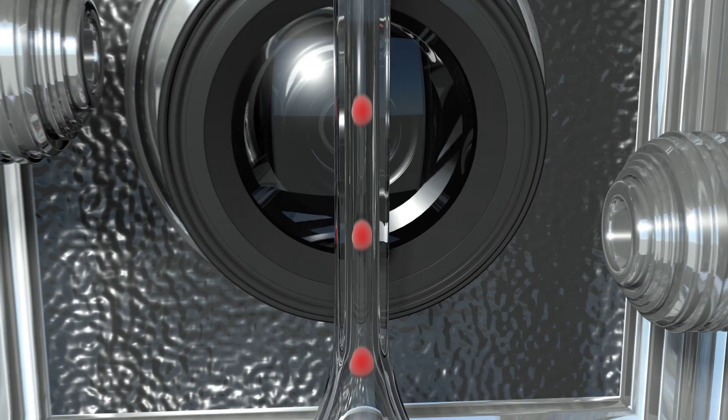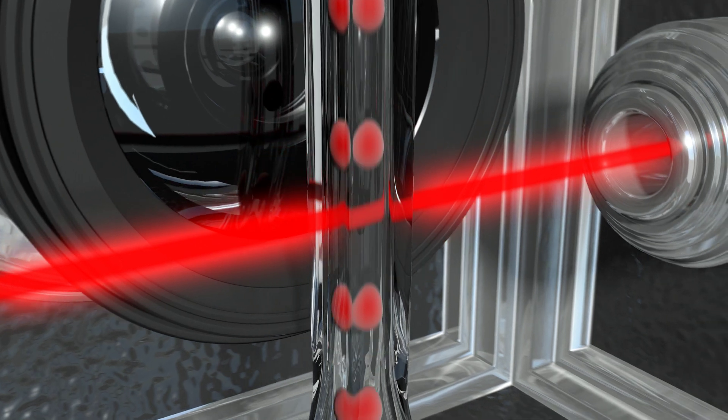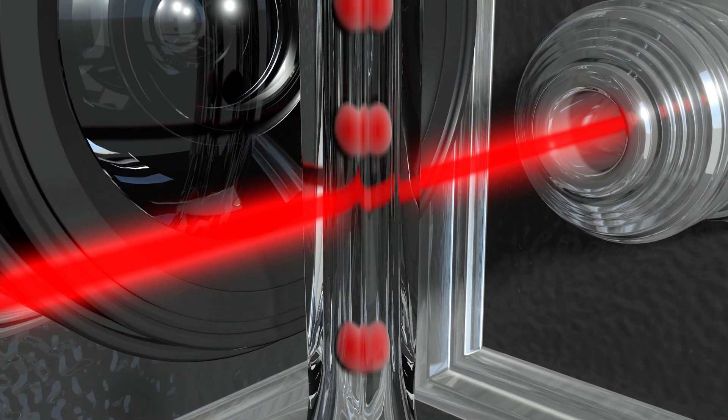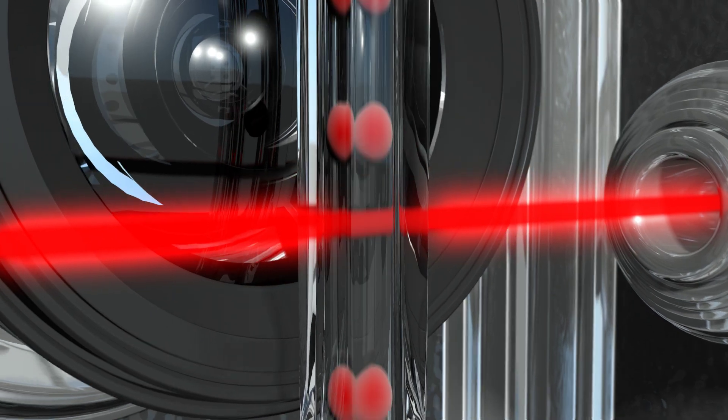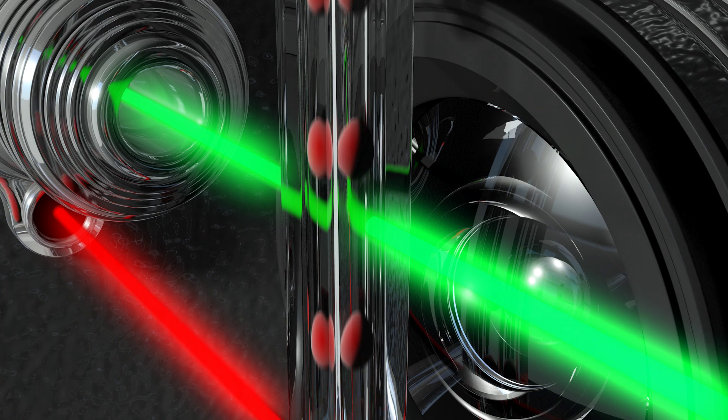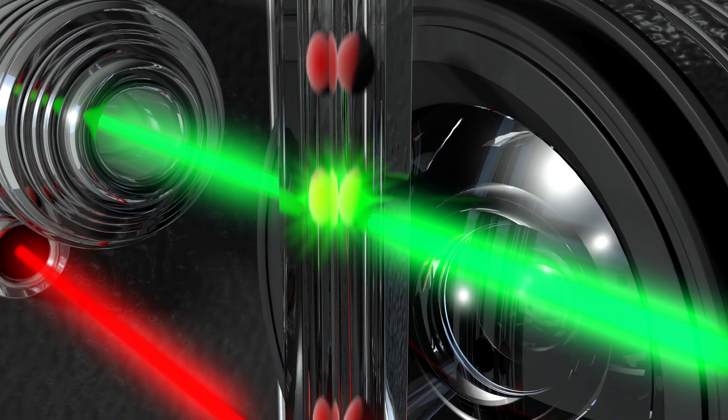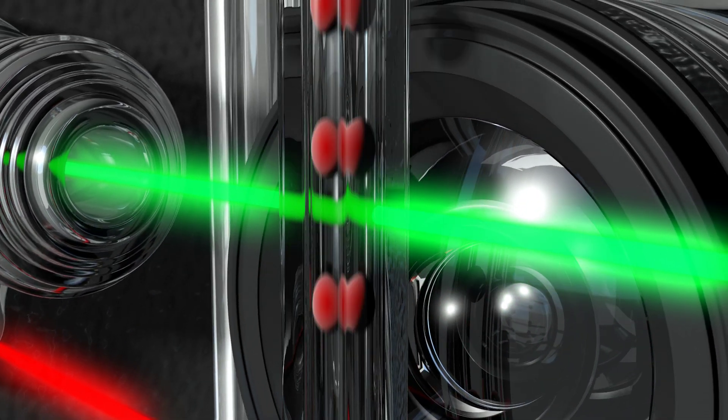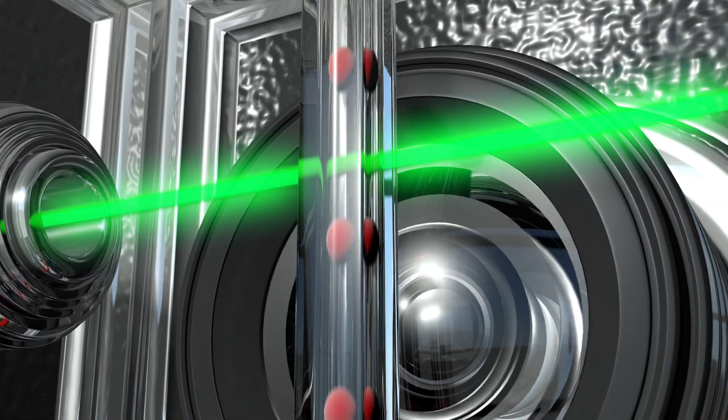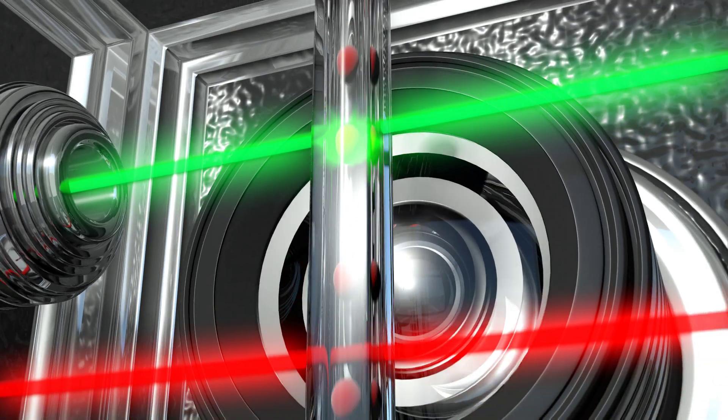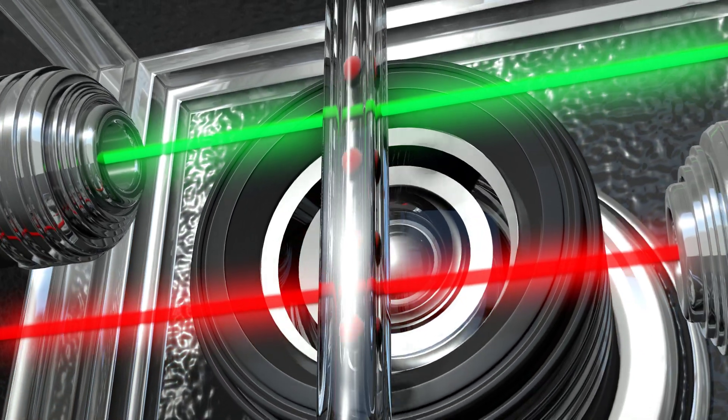As each bead passes through the cuvette, a red laser excites the internal dyes, allowing proper classification of the bead, which in turn identifies the analyte attached to the bead. A green laser excites the labeling molecule bound to the analyte on the bead, providing information on the amount of analyte present. Both classification and reporter readings are made on each individual bead, so the FlexMap 3D system is able to precisely determine multiplexed assay results.